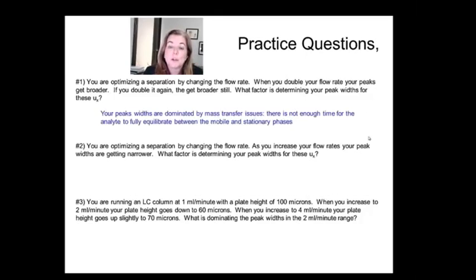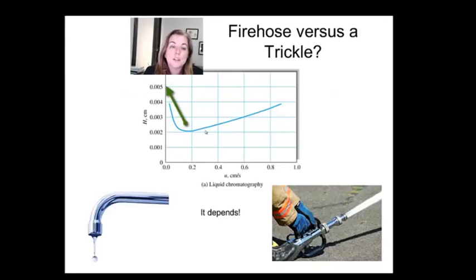Okay let's look at the next one. Now we're increasing our flow rates and our widths are getting narrower. What does that mean? Well if we go back to this graph we're clearly not here because we're increasing flow rates and they're getting narrower so that's a good thing. That must mean we're in this part of the Van Deemter equation. So we are limited by mobile phase diffusion and by going a little bit faster we're narrowing up our peaks because not so much diffusion is happening.